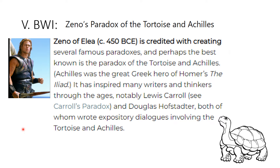Zeno of Elea, around 450 BCE, is credited with creating several famous paradoxes, and perhaps the best known is the Paradox of the Tortoise and Achilles. Achilles was the great Greek hero of Homer's the Iliad. This paradox inspired many writers and thinkers through the ages, notably Lewis Carroll — also a math history figure who wrote Alice in Wonderland — and Douglas Hofstadter, a present-day educator, both of whom wrote expository dialogues involving the tortoise and Achilles.